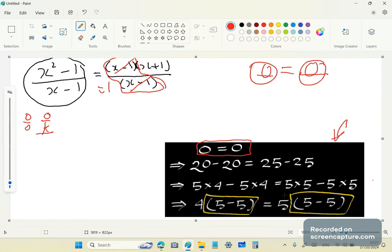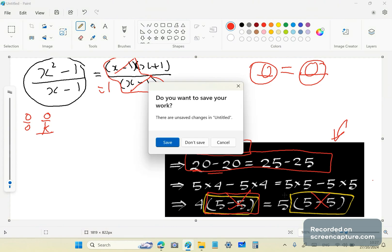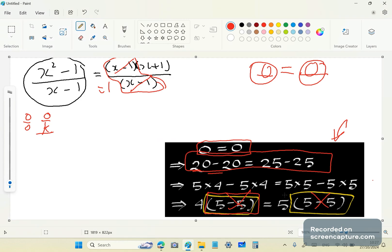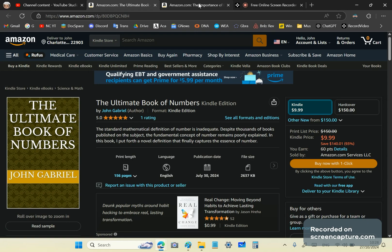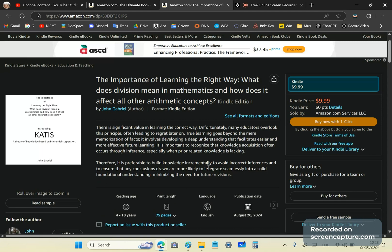So, if you write 20 minus 20 is equal to 25 minus 25, like that, and then you do this factorization, then you try to divide by this factor, you can't because this is not a number, see? So, most of the problems that you'll find in algebra are related to zero not being a number.